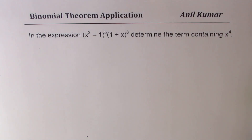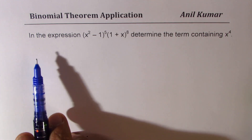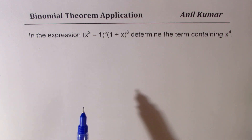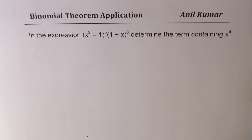I'm Anil Kumar sharing with you a test question on binomial theorem application. The question is: in the expression (x² - 1)^5 × (1 + x)^8, determine the term containing x to the power of 4.